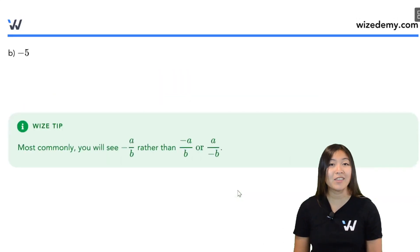Part B, we have negative 5, not a decimal. So what do we do? Do we multiply by 10, 100? No, just multiply by 1 over 1. Because there's no decimals, so I don't need any zeros.